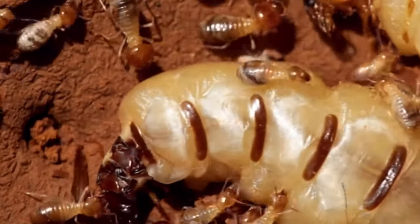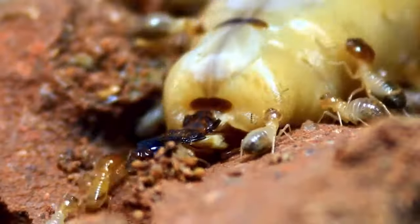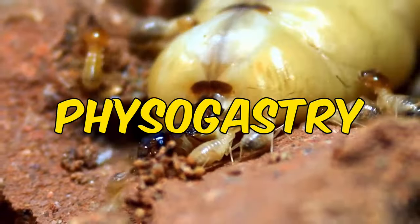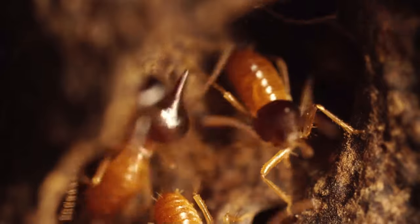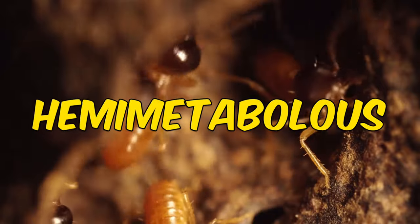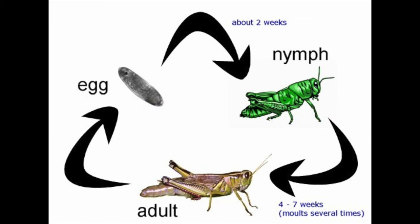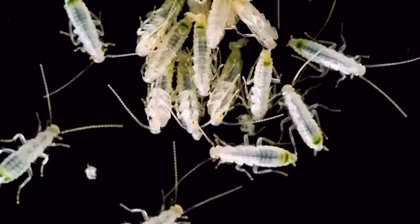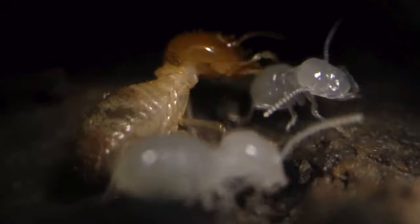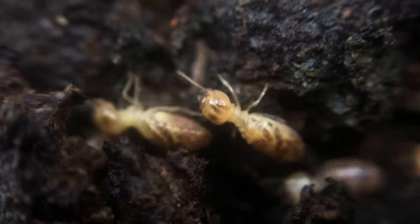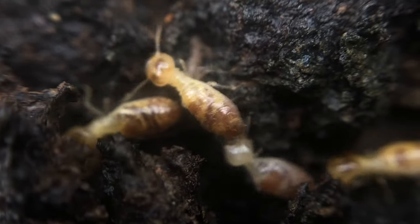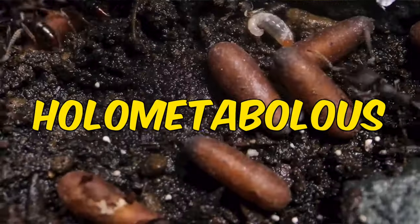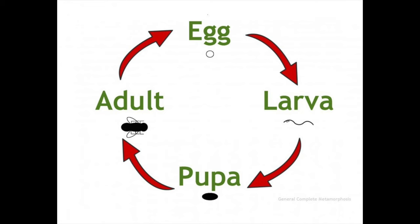The queen lays eggs and eventually swells to four to six inches, a process known as physogastry. Termites are hemimetabolists, undergoing incomplete metamorphosis just like roaches — they have a nymph stage and molt until they become adults. Ants, by contrast, undergo complete metamorphosis, having larvae and pupae.